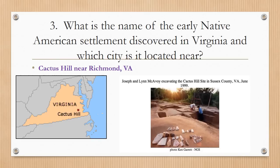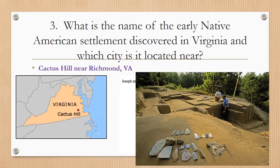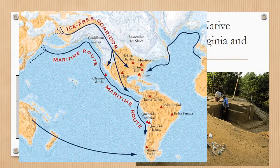Number three: what is the name of the early Native American settlement discovered in Virginia, and which city is located near it? Cactus Hill, near Richmond, Virginia, is that very old, very ancient Native American settlement. You can see they were working at the site in 1999, with the site being further excavated and some of the artifacts that were found.